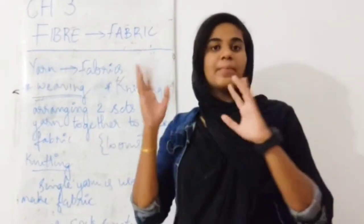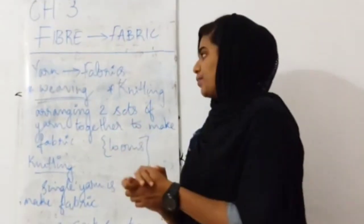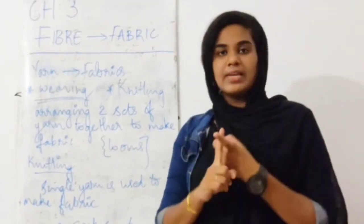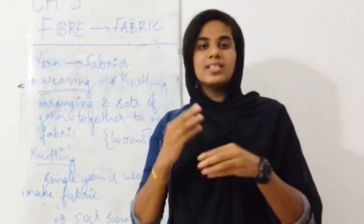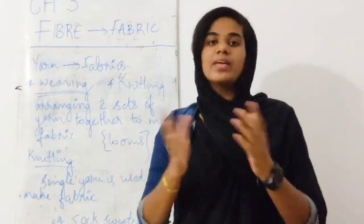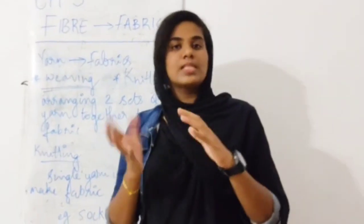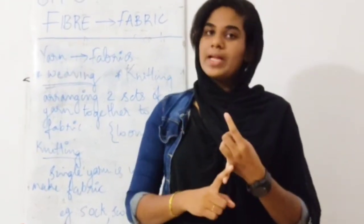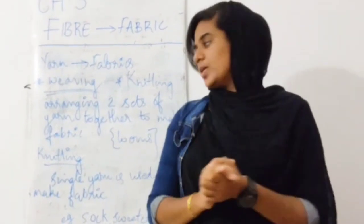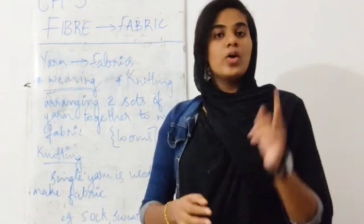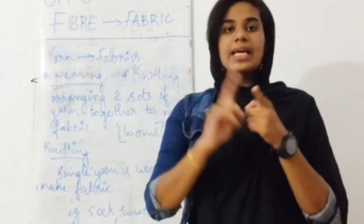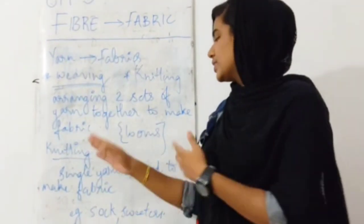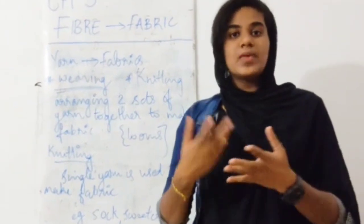Yarn to fabric — there are two processes. The first one is weaving, and the second one is knitting. Weaving means two sets of yarn are arranged to make fabric, using hand looms or power looms. Knitting uses a single yarn to make fabric. Examples of knitted fabric are socks and sweaters.